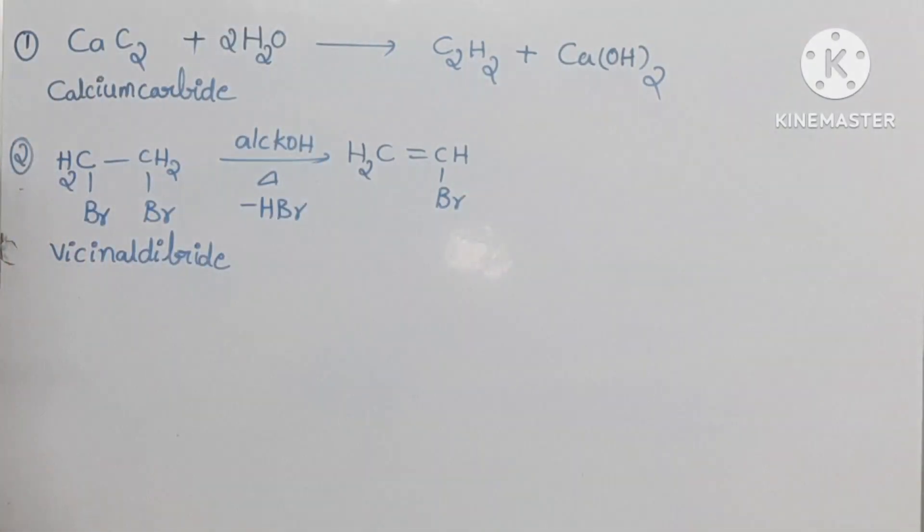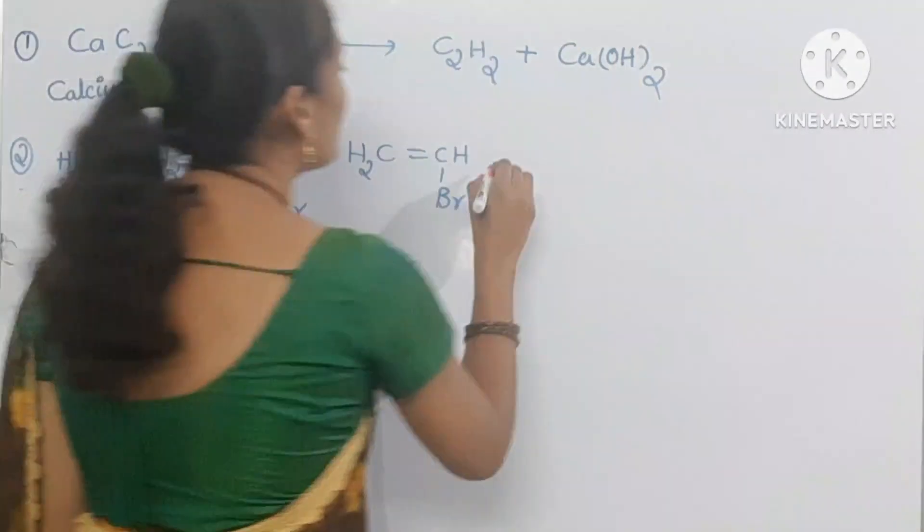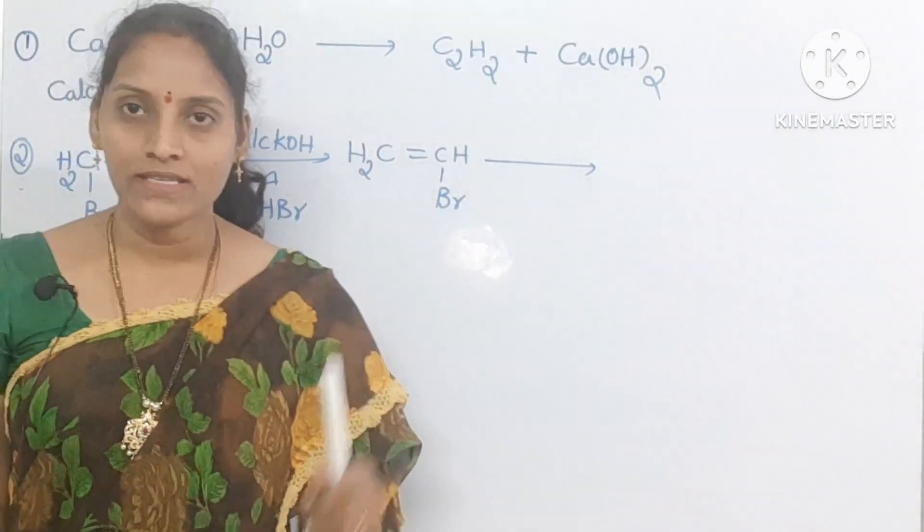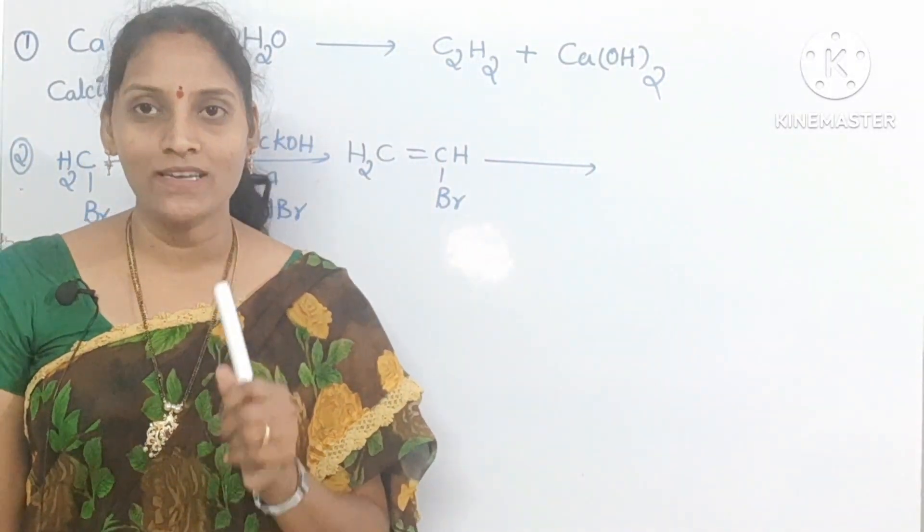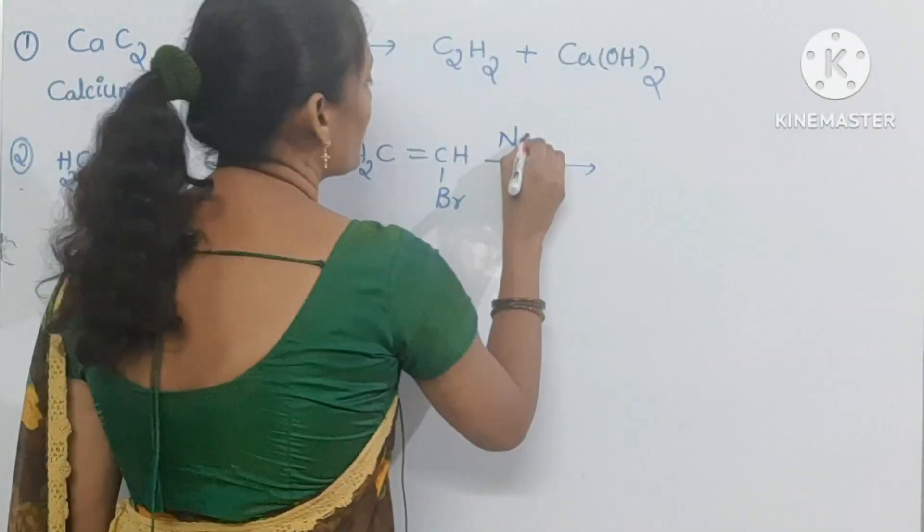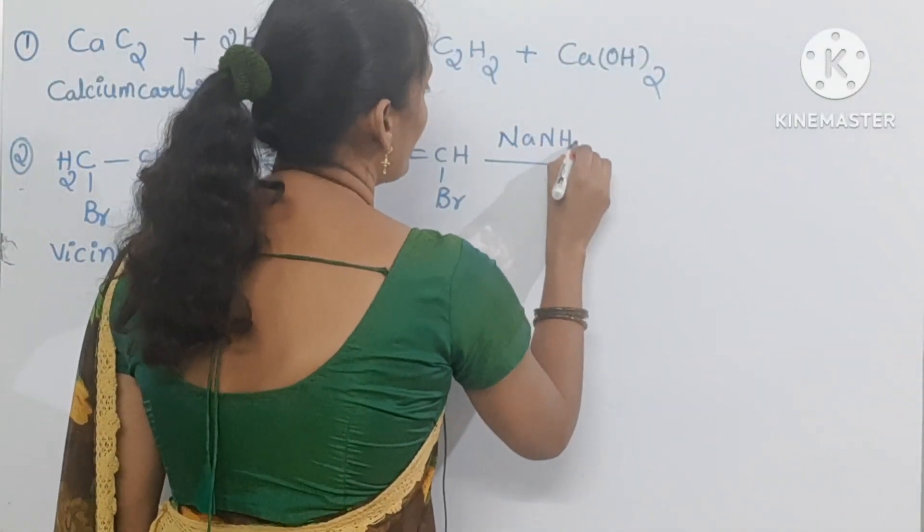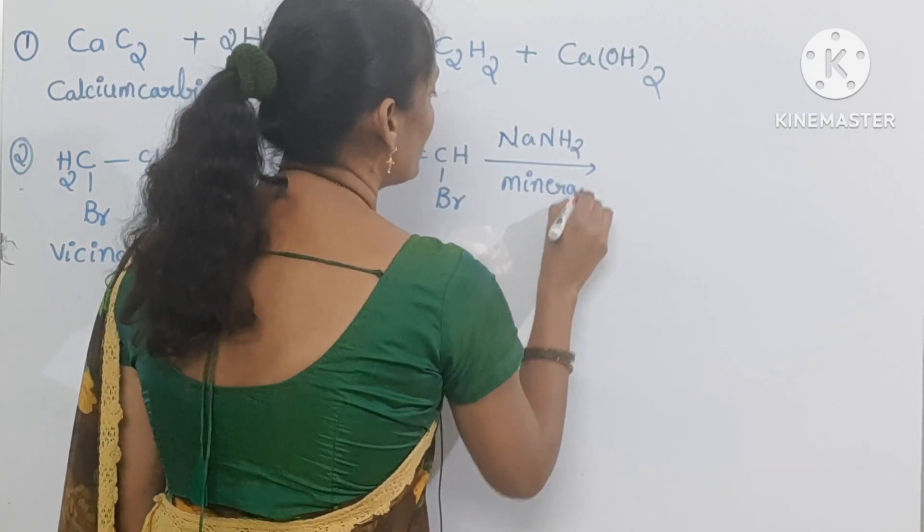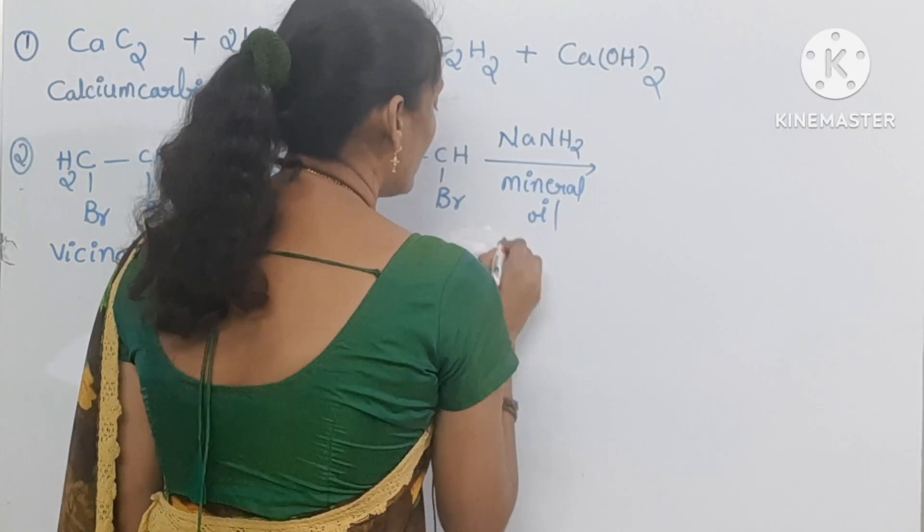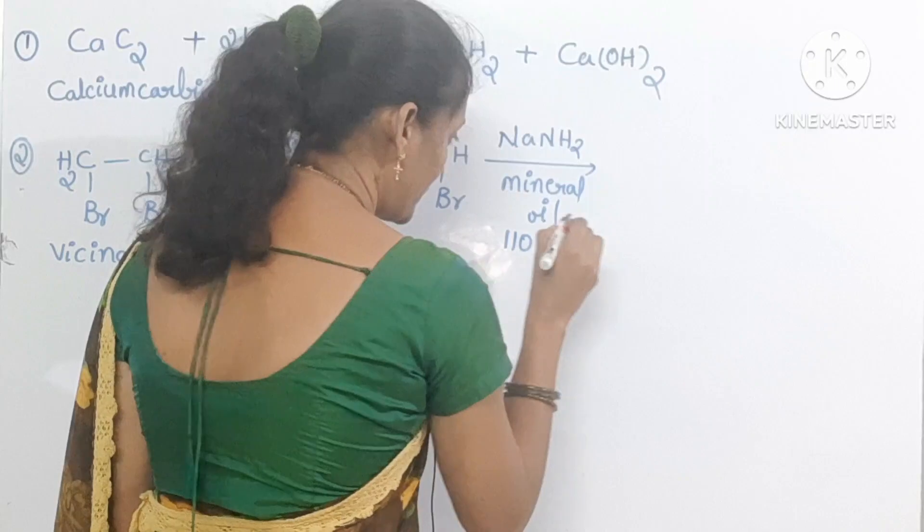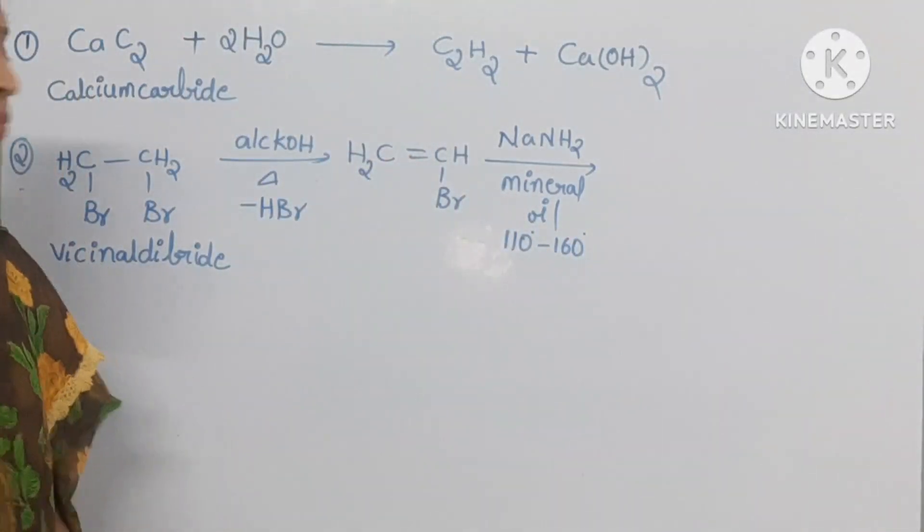And then again you need to do this in the second step. In the second step we need to use NaNH2 in presence of mineral oil. Temperature is 110 to 160 degree centigrade.